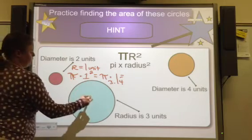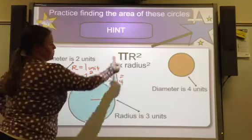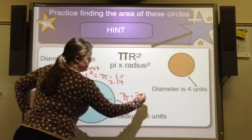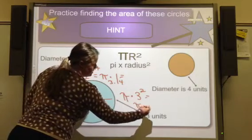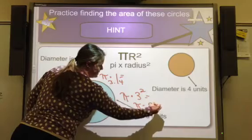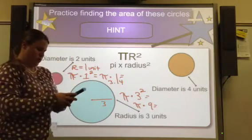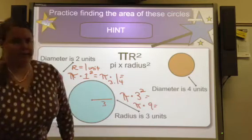This one shows me that the radius is 3 units. So I can go pi times 3 squared, which is pi times 9. And I can put it on my calculator. So 3.14 times 9, and that equals 28.26.